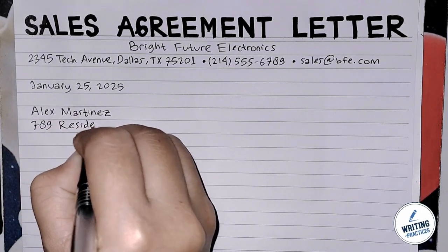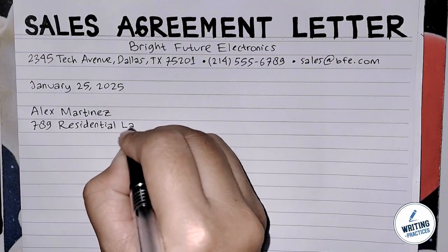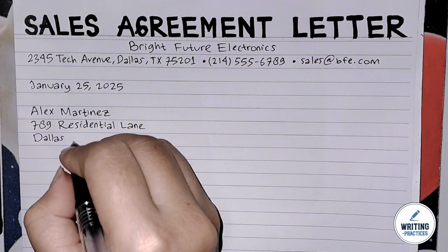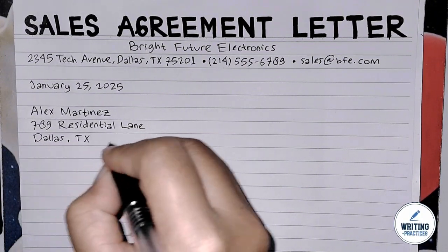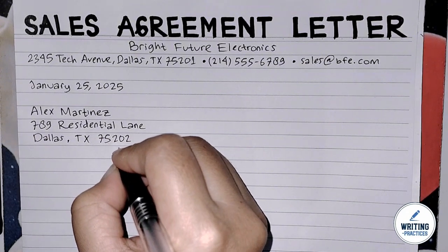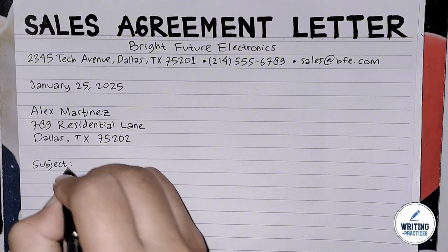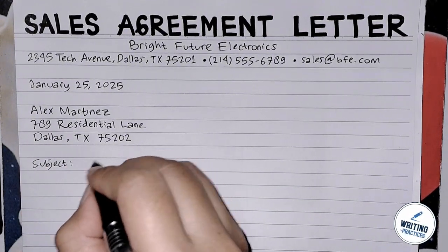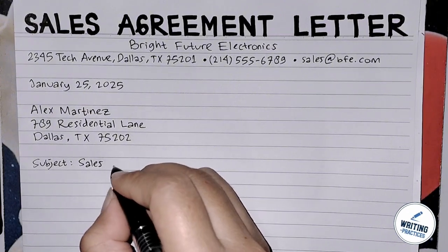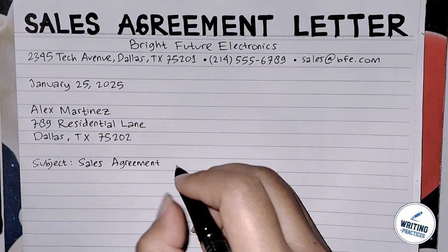Under the sender's information, write the date when the letter or agreement is written. The date establishes when the terms outlined in the agreement become effective. After that, write the recipient's information — the full name and address of the individual or entity, the buyer, entering into the agreement. Ensuring that the recipient's details are accurate is crucial for legal purposes and formal communication.